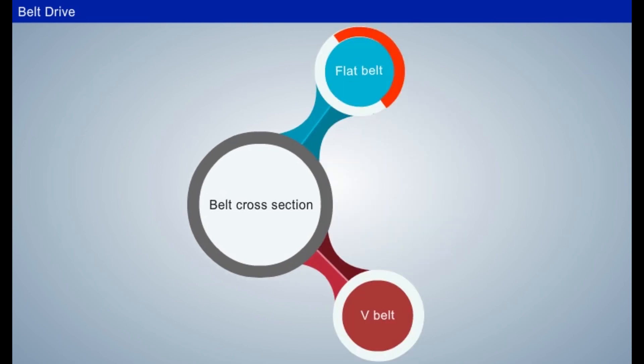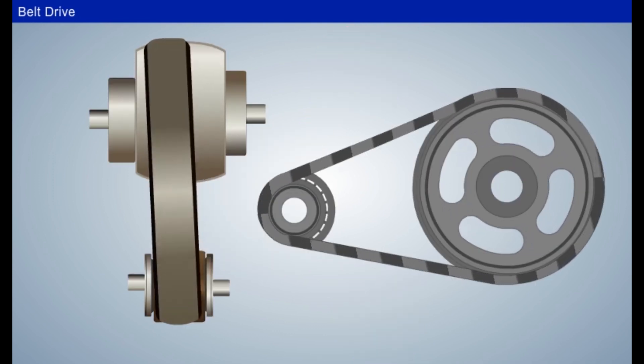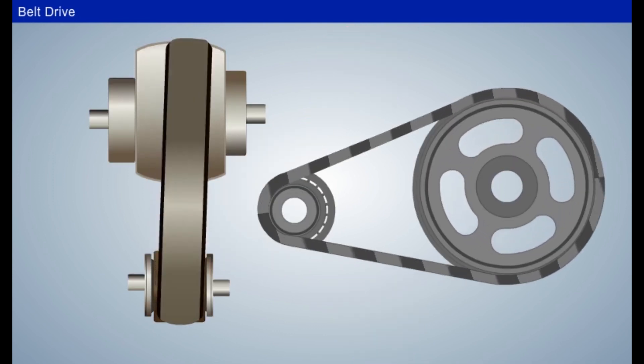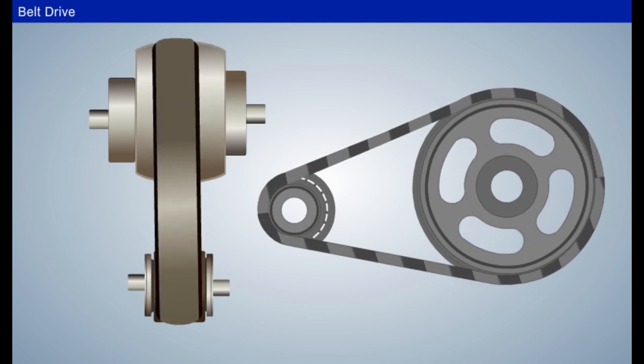In a flat belt drive, rim of pulley is slightly crowned which helps to keep the belt running centrally on the pulley rim.